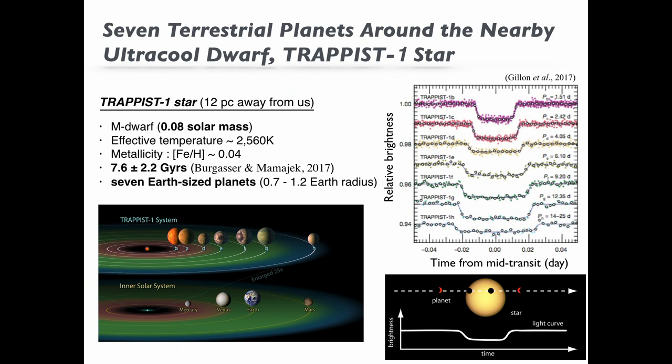The TRAPPIST-1 star is about 12 parsecs away from Earth. It is classified as an M-type star, but the mass of the star is about 0.08 times solar mass, which is across the star at the brown dwarf mass boundary. The age of the star is not well determined, but it may be older than our sun.